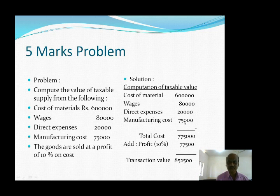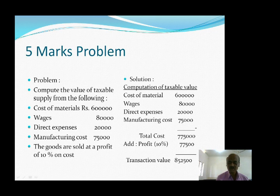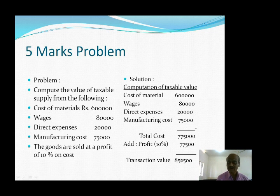Manufacturing cost is rupees 75,000. Total cost of production is rupees 7,75,000. Add 10% profit on cost: 10% of 7,75,000 is rupees 77,500. So 7,75,000 plus 77,500 equals rupees 8,52,500. This rupees 8,52,500 is the transaction value — the assessable value.